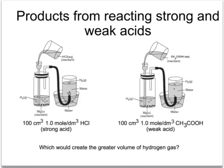It's clear that the reaction on the left-hand side with the strong acid is much faster, the bubbles of hydrogen being produced more quickly, and that's what we'd expect. But which one will create, ultimately, the greater volume of hydrogen gas? Well, actually, they'll create the same volume of hydrogen gas because we're using the same volume of the same concentration of each of the acids.